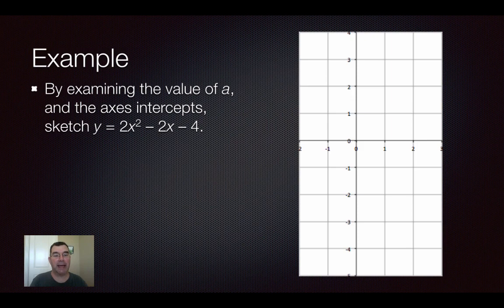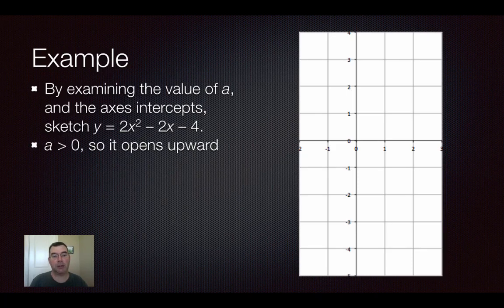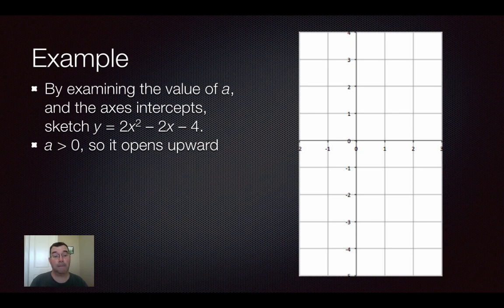By examining the value of a and the axes intercepts, we're going to sketch a graph of y equals 2x squared minus 2x minus 4. So we've talked about how to find the axes intercepts, so that's going to help and we're going to use that along with the value of a.